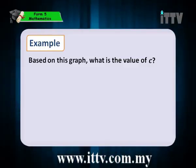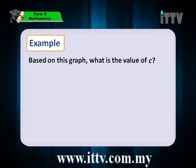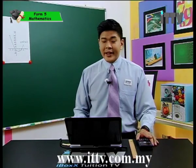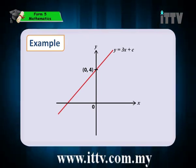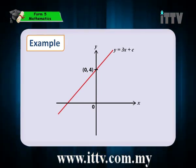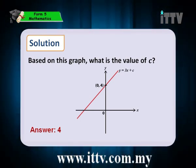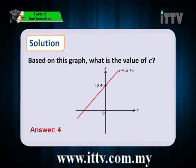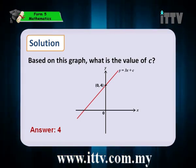Just a quick question: based on this graph, what is the value of c? C is the y-intercept, and very clearly from the graph we can see that the coordinates of the y-intercept of this straight line is (0, 4). So the y-intercept is 4, and hence c equals 4.